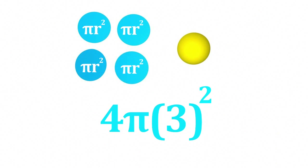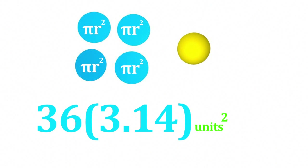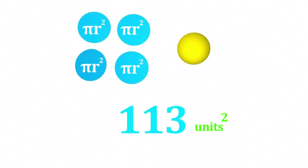If we have a sphere of radius three units, then its surface area is 36 pi r squared. And if we approximate pi as 3.14, then we can calculate that its surface area is about 113 units squared.